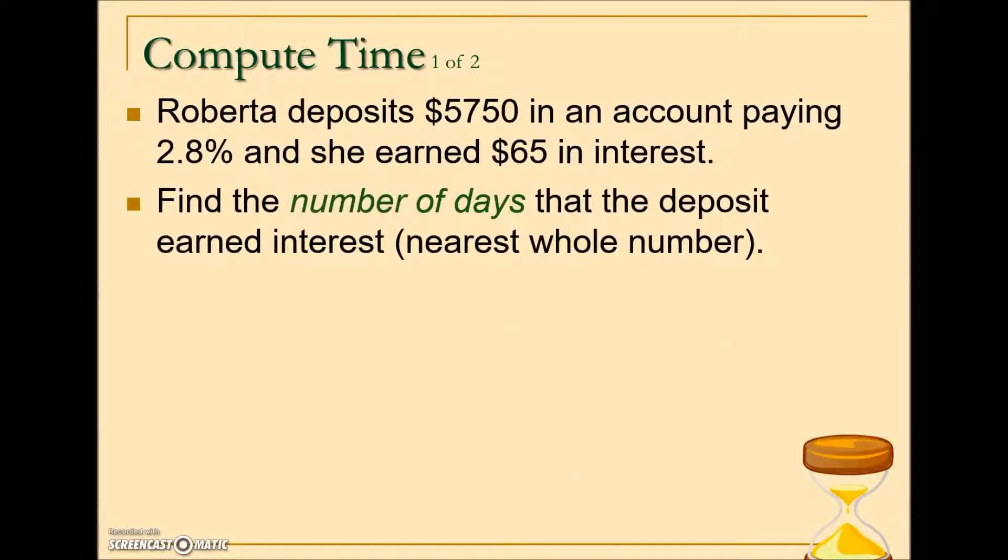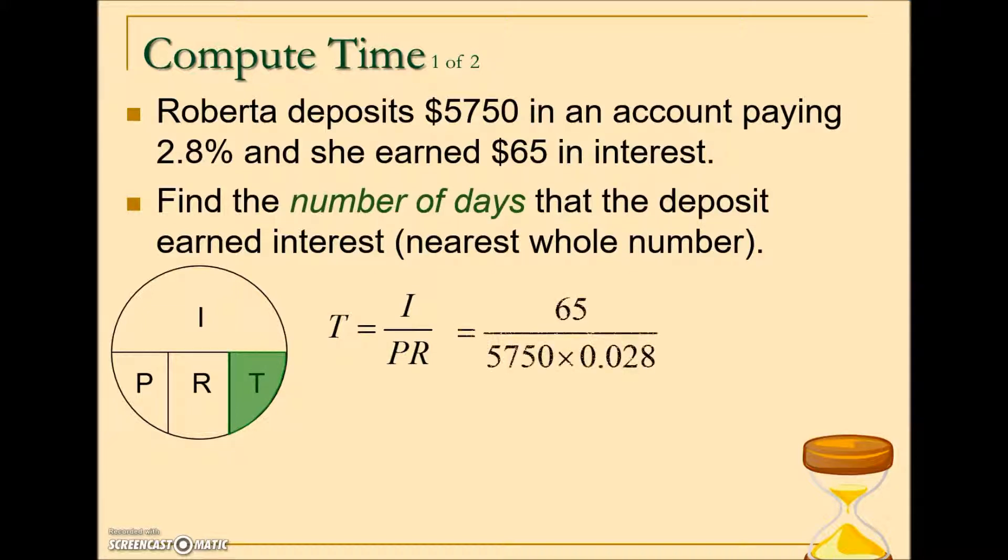The last calculation that we will look at is finding the time. In this example, we're given that Roberta deposits $5,750 in an account paying 2.8%, and she earned $65 in interest. Find the number of days that the deposit earned the interest. So we're given principal, rate, and interest. Savings accounts where we're depositing the money and earning interest on that deposit are calculated the same way as though we were borrowing money and paying the interest charge for the use of that money. The problem is asking us for time. The arrangement using our circle formula gives us that to calculate time, we will take interest divided by principal times rate.